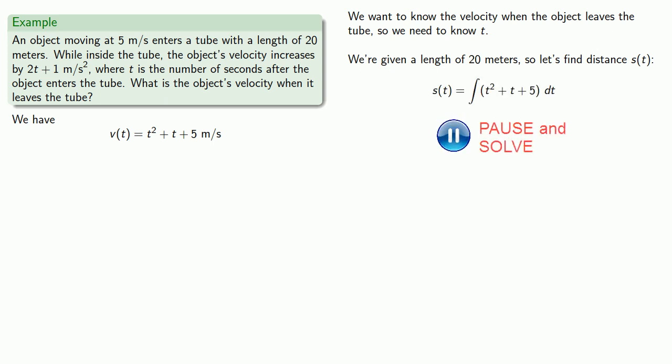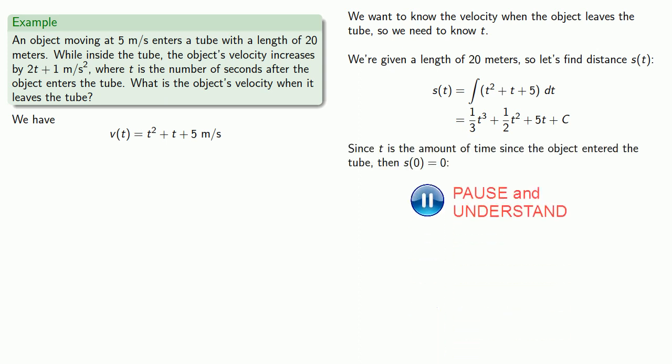Since t is the amount of time since the object entered the tube, then s of 0 has to be 0. That tells us that the constant also is equal to 0, and so I have my formula for s of t, the object's location within the tube.